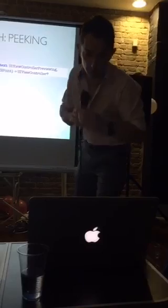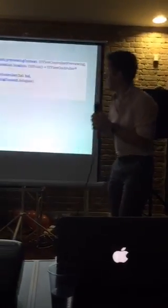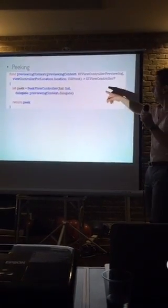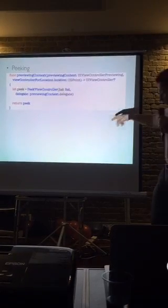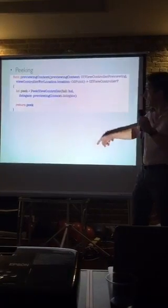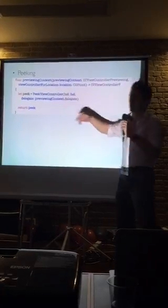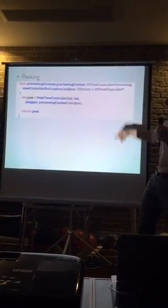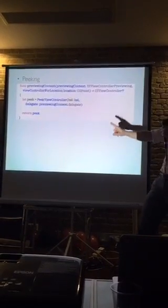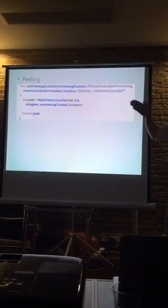So for me to do this in ChromaTouch, I've extended my main hue controller to implement the UIViewControllerPreviewingDelegate. The implementation is that I create an instance of my peek view controller, pass it an HSL struct for hue, saturation, and lightness, and pass it the previewing context delegate which points back to the main application. And by returning that, with very little other code, I get this nice peek behavior.